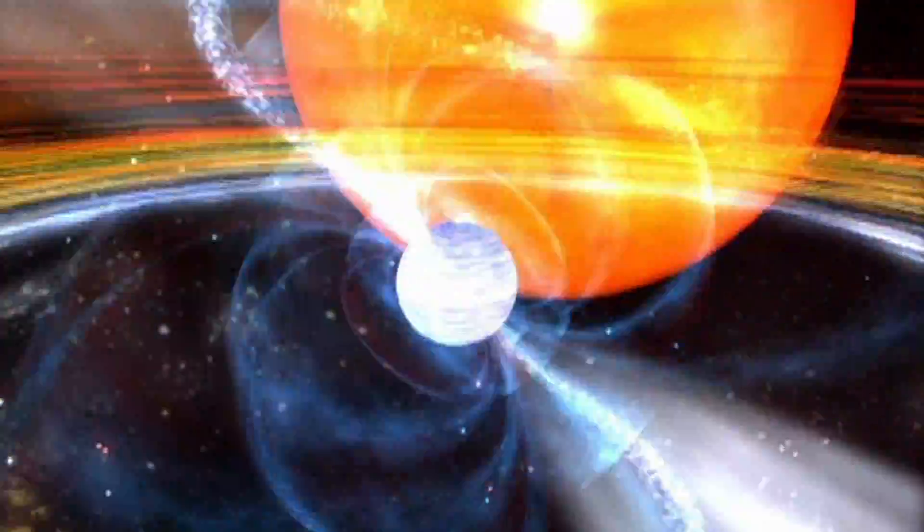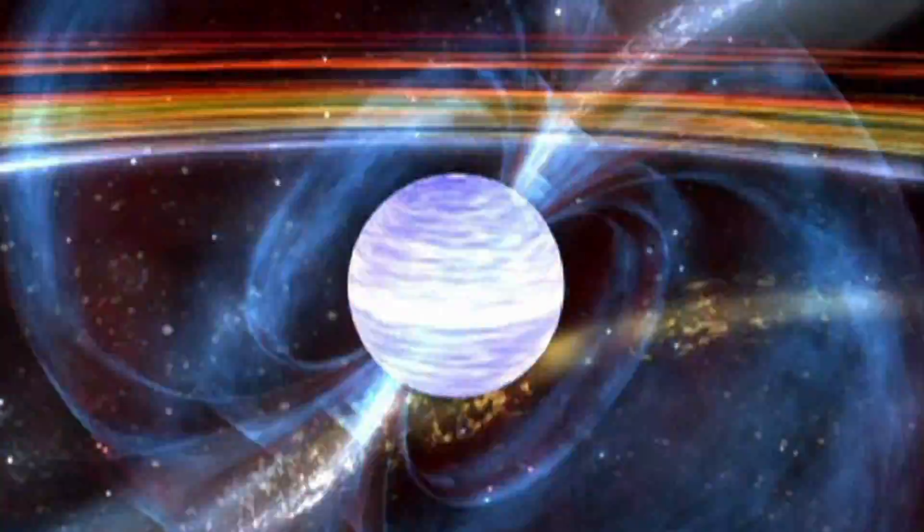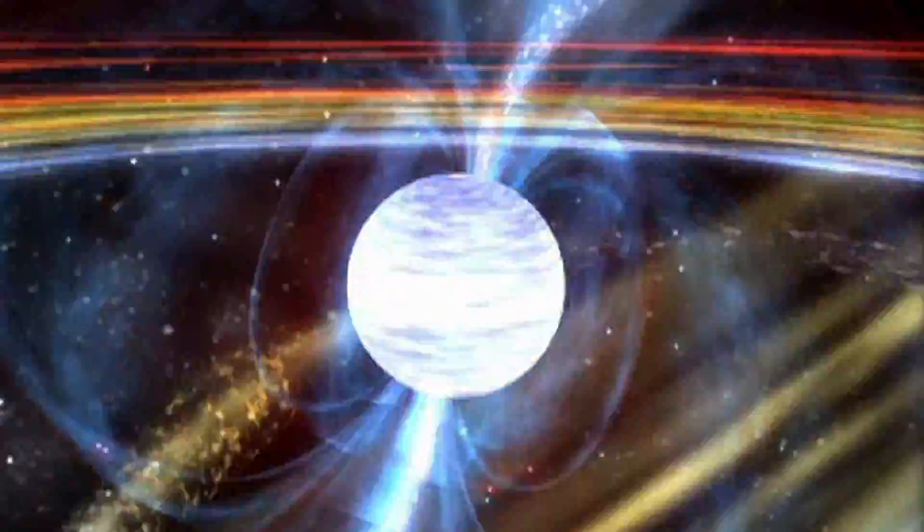So you end up getting a neutron star that spins very rapidly. The fastest one that we know, which we actually found with the Green Meg Telescope, is spinning 716 times per second. That's hundreds of times per second, faster than a kitchen blender spins.